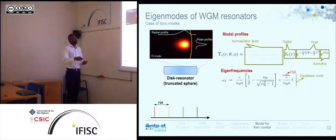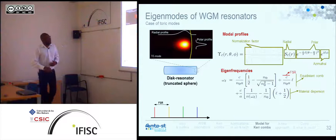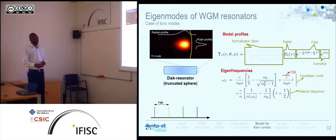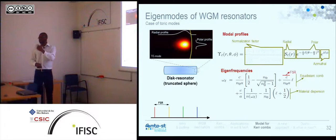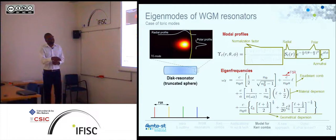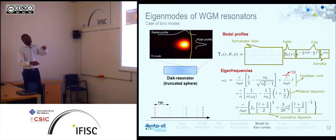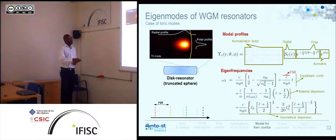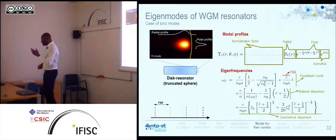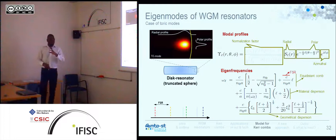Life is not easy — you have to take into account other terms like material dispersion. Since you have a comb, all the spectral lines see a different refractive index — for each line, it's effectively a different cavity. This induces a dispersion term. There is also a geometrical dispersion term that takes into account the curvature of the disk. At the end of the day, you don't have an exactly equidistant comb but something slightly non-equidistant. This non-equidistance — which is dispersion — is extremely important, as I will explain.